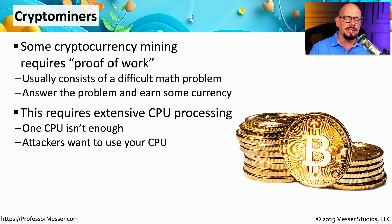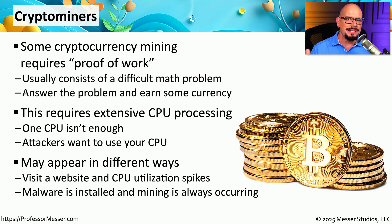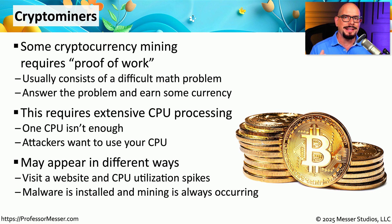Malware writers know that they could write malware to embed onto other people's computers just so they can run through these mathematical equations in the hopes of making more cryptocurrency. Some of these malicious crypto miners will run as JavaScript on a web page, so you visit a website and suddenly notice that your CPU is spiked. Or you might accidentally click a link in an email or download software as part of a Trojan horse, and now there is a malicious crypto miner running as an executable on your system.